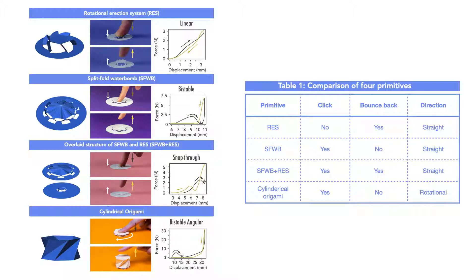First, rotational erection system. RAS is called for short. It has a linear property. As you push or release the structure, it moves gradually without a click.